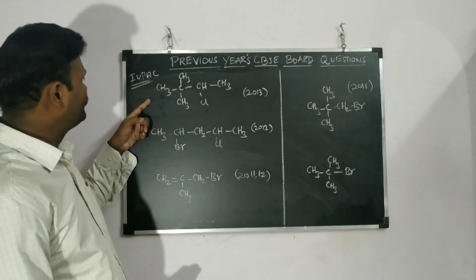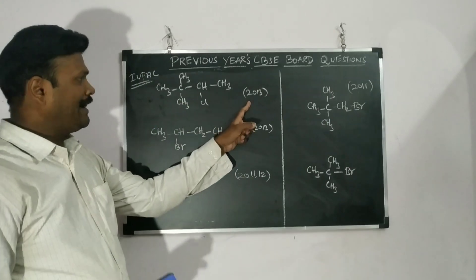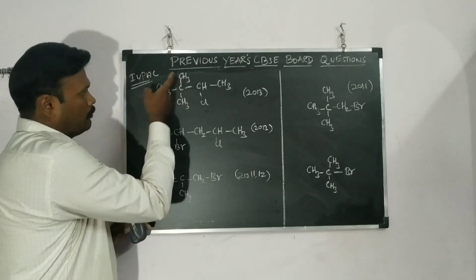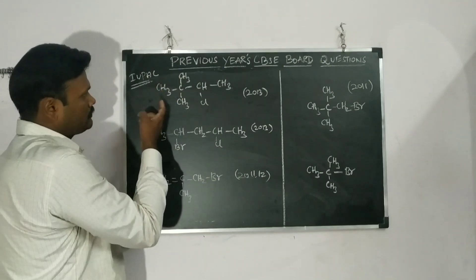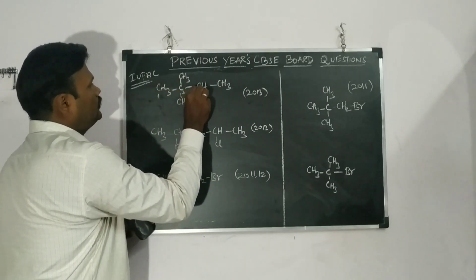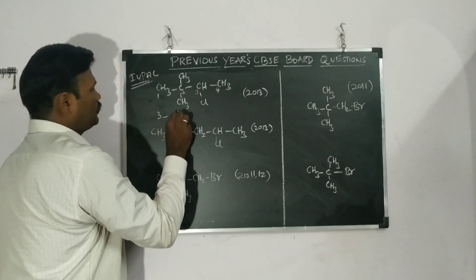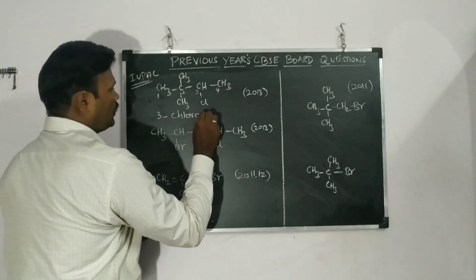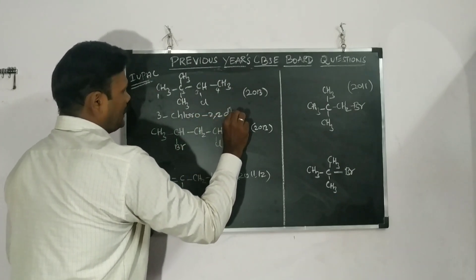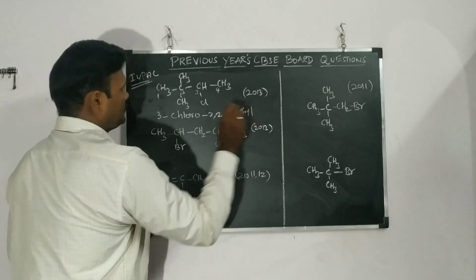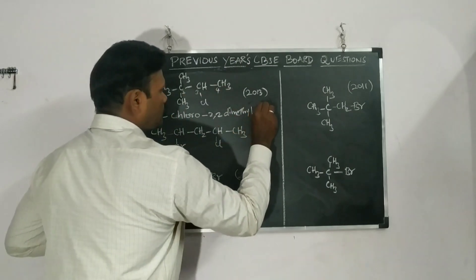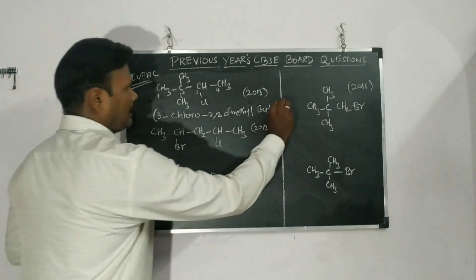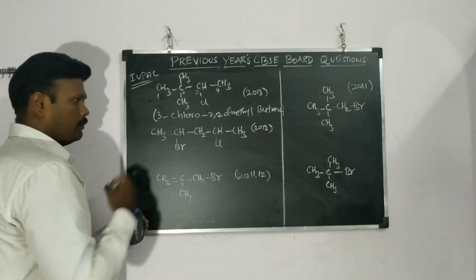The next one — also asked in 2013 — has more branching. We start numbering from here: one, two, three, four. The name is 3-chloro-2,2-dimethylbutane. Total number of carbon atoms is four, so butane.